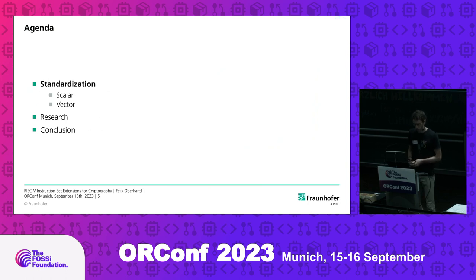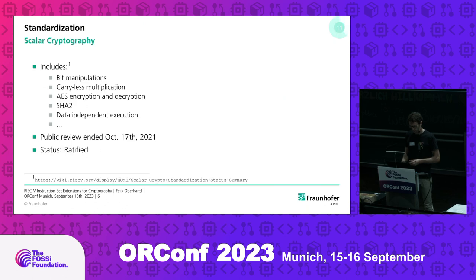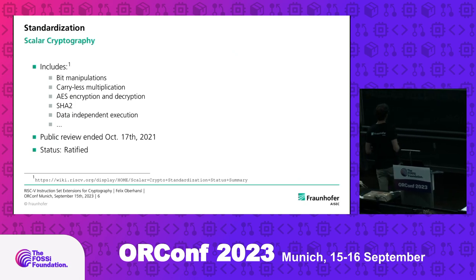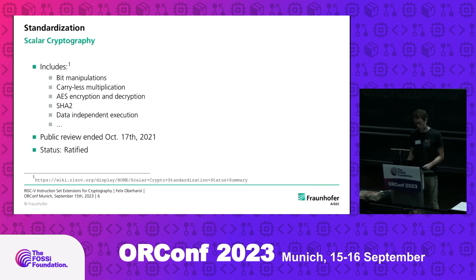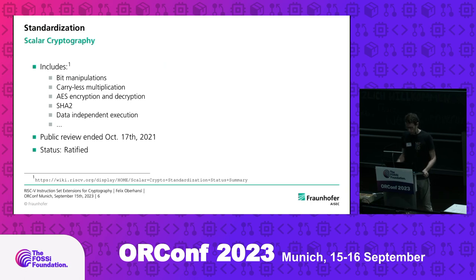Now that I've hopefully motivated you, some notes on my agenda. I want to start with standardization, even though my talk is entitled 'From Research to Standardization.' We will see that the two work hand-in-hand very closely. We already have ratified extensions in RISC-V for scalar cryptography. Those include very basic extensions for bit manipulations, more advanced carry-less multiplications, and extensions for complete dedicated algorithms like AES and SHA-2. Also interesting: extensions for data-independent execution — something we need for cryptography. Those were reviewed and ratified in 2021.